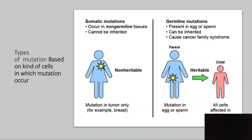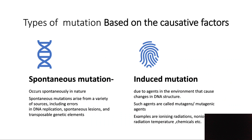Now we have learned what somatic mutations and germ line mutations are. Based on what caused the mutation, mutations can be divided into two types: spontaneous mutation and induced mutation.